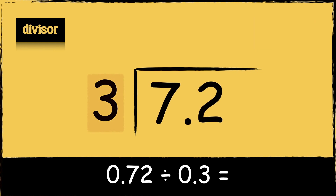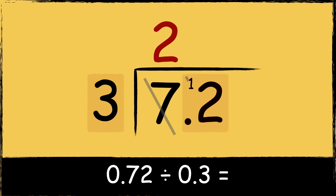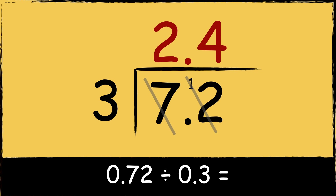We need to find out how many times the divisor fits into these numbers. Three goes into seven twice with one left over. Then three goes into twelve four times. The dividend has one digit after the decimal place, so we need to make sure that the answer also has one digit after the decimal place. So the answer is 2.4.